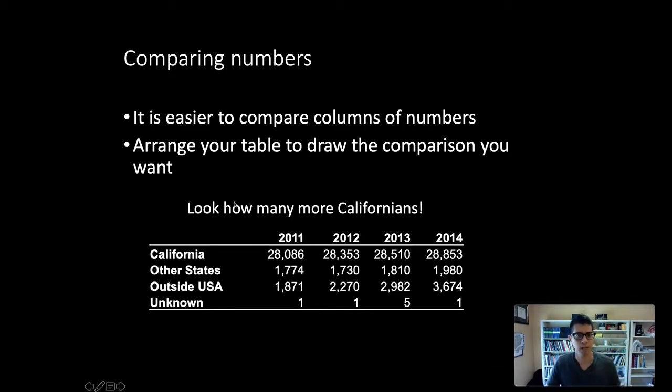When we're visually doing a comparison, the eye tends to look down the columns and compare those numbers to one another much more easily than across rows. In this particular table, the eye is going down the column with numbers and it looks like, okay, 28,000 Californians versus only 1,700 other states, only 1,900 outside the US. In every year there are a lot more Californians than there are people in other states.